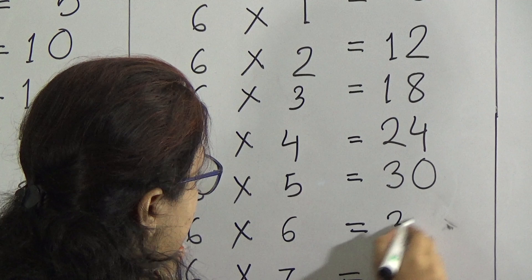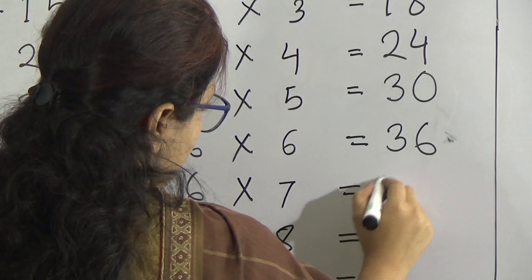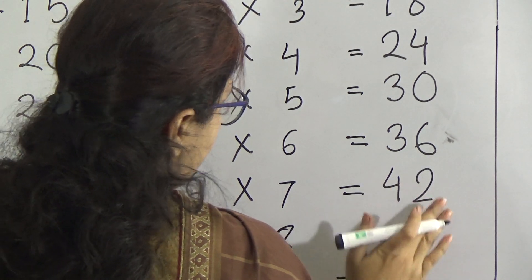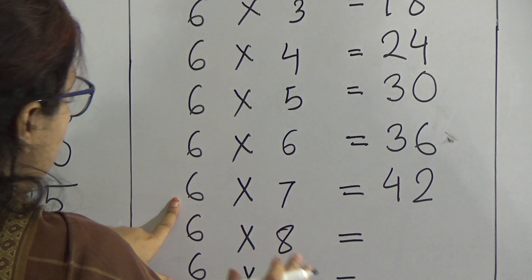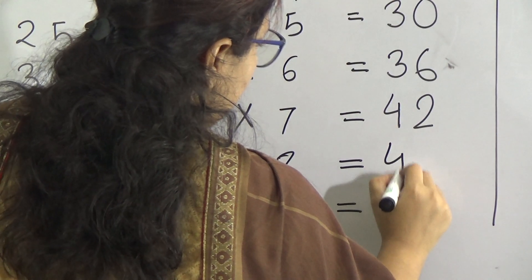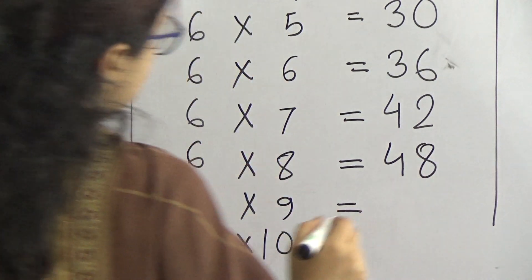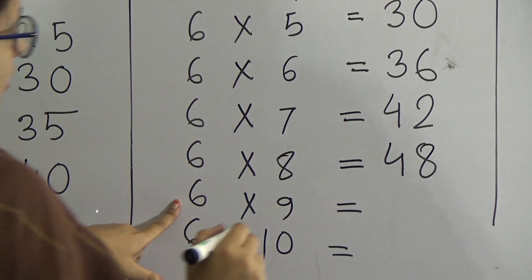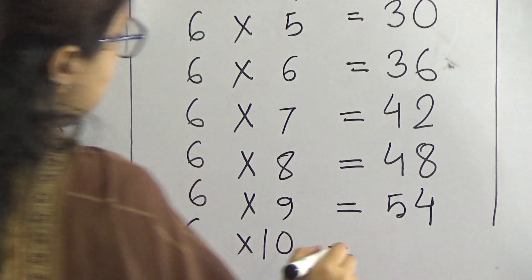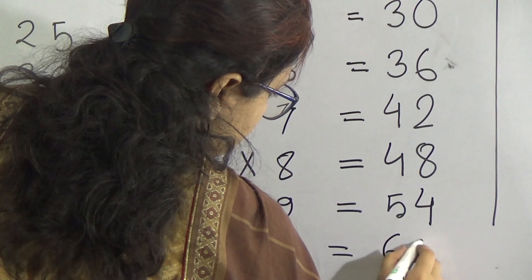6 times 6 is 36. 6 times 7 is 42. 6 times 8 is 48. 6 times 9 is 54. 6 times 10 is 60.